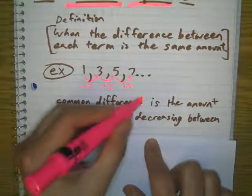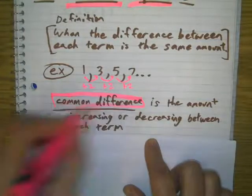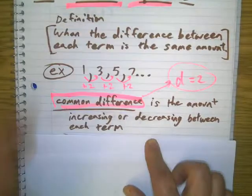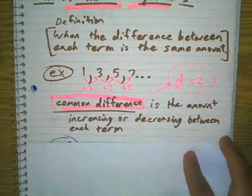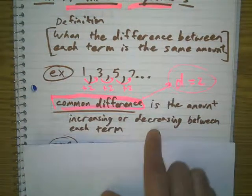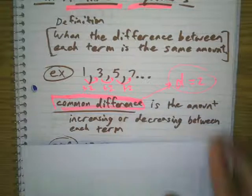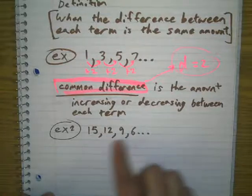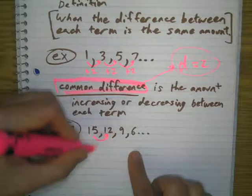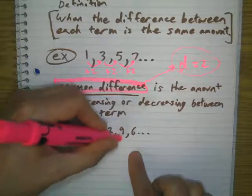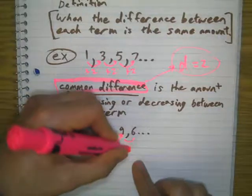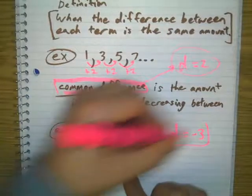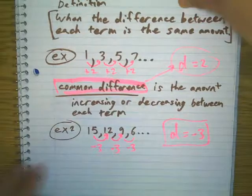The amount that I'm adding is called the common difference. In this example, the common difference is 2 — that's the amount we add each time. It could be increasing or decreasing. For example, look at 15, 12, 9, 6 — I'm subtracting 3 each time, so the common difference is equal to negative 3.